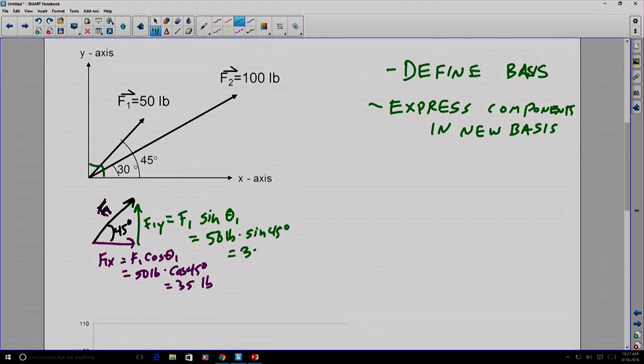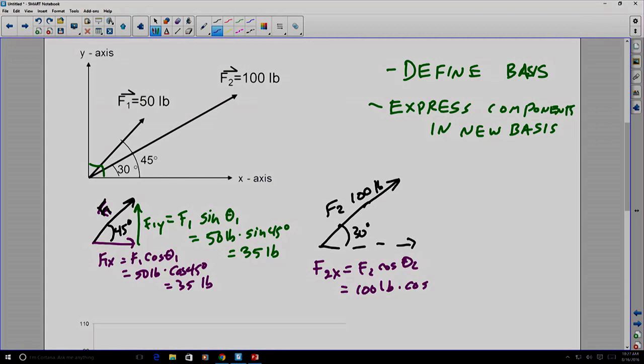We apply this same process to f2, recognizing that it has a different angle of 30 degrees. So now, f2 of x is equal to f2 cosine of that angle. Or 100 pounds times the cosine of 30 degrees. Which is 87 pounds. And our y-component is similarly the sine of the angle. So 100 pounds times the sine of 30 degrees. Which is going to give us 50 pounds.